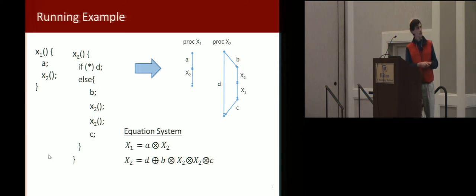So here's the equation system. Here's the program, the control flow graph, the equation system. Each summand in the equation system corresponds to a path through the control flow graph. So here we have just these three paths.